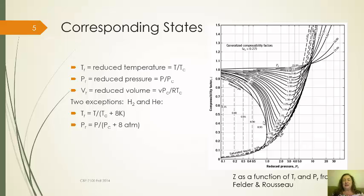Now hydrogen and helium are exceptions to all of these. The molecules are so tiny and so nearly spherical that they don't seem to fit the same model as everything else. For those you have to add 8 Kelvin or 8 atmospheres to the critical temperature or pressure in the formulas. But other than those two, everything else seems to work very well using these reduced temperature and pressure values.